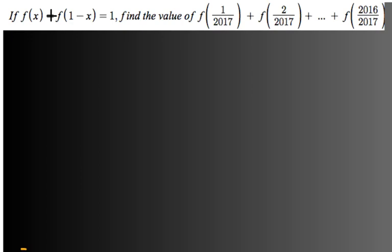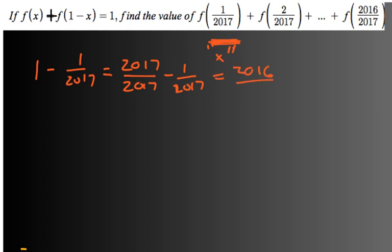All right. So hopefully you paused and have an answer. The way I think about this one, I'm going to take this to be x. And I'm going to just see what 1 minus x would be. So if that was x, I'm going to kind of make that x. 1 minus 1 over 2017, you'd have to get a common denominator. So you get 2017 over 2017 is a 1, and then minus 1 over 2017. That's going to be 2016 over 2017.